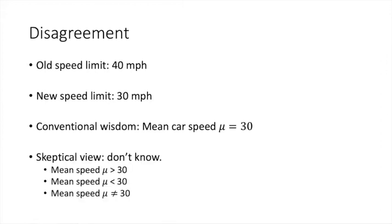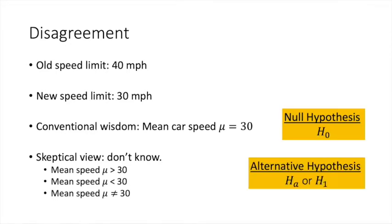However, skeptics who have observed driving behaviors doubt that. In fact, they say that the mean speed could be greater, less than, or just not equal to 30. So in statistics, we call the conventional belief as the null hypothesis or H₀, whereas the skeptic's view is called the alternative hypothesis and it is represented by Hₐ or H₁.